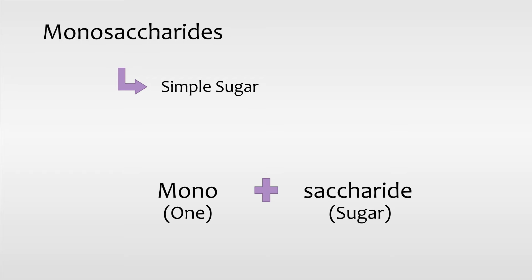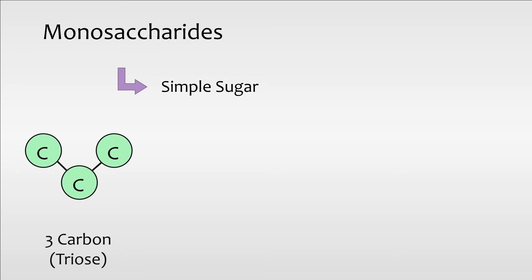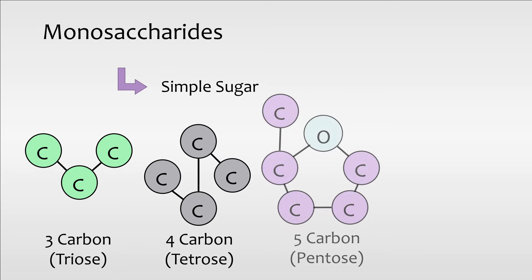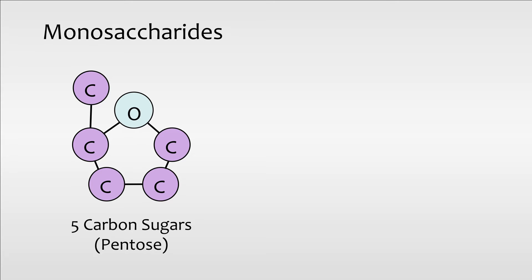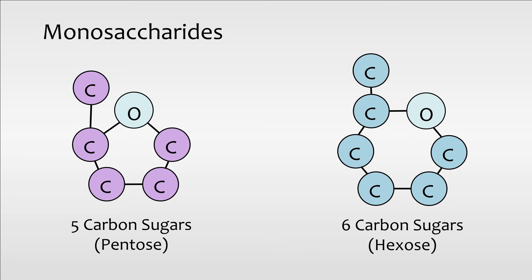Monosaccharides are also known as simple sugars. Mono is 1, saccharides is sugar. Monosaccharides commonly consist of molecules of 3 carbons called triose, 4 carbons tetrals, 5 carbons pentose, or 6 carbons hexose. The most important monosaccharides to humans are the 5 carbon and 6 carbon sugars.